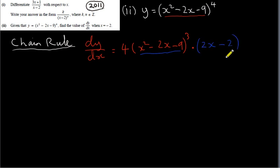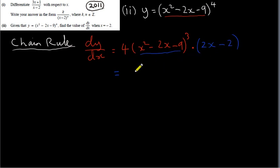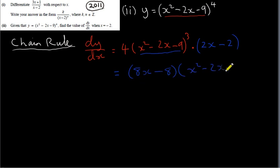Since 2x minus 2 has two terms, we put it in brackets. The next step is to multiply 2x minus 2 by the 4 in front, just to simplify — we don't touch the bracket raised to the power of 3. Multiplying 4 by 2x minus 2: 4 times 2x is 8x, and 4 times minus 2 is minus 8. This is multiplied by x squared minus 2x minus 9 to the power of 3 in brackets. That's dy/dx — the derivative.